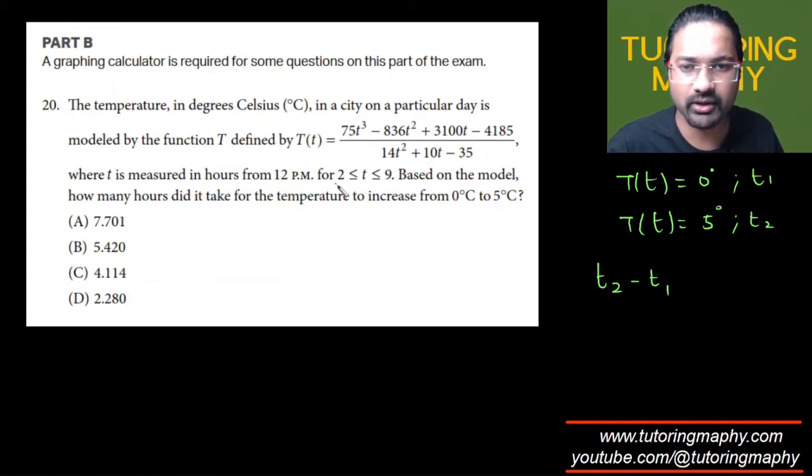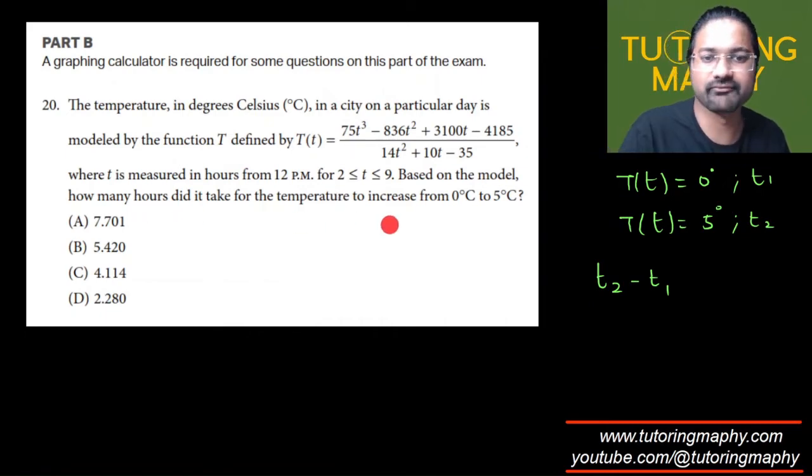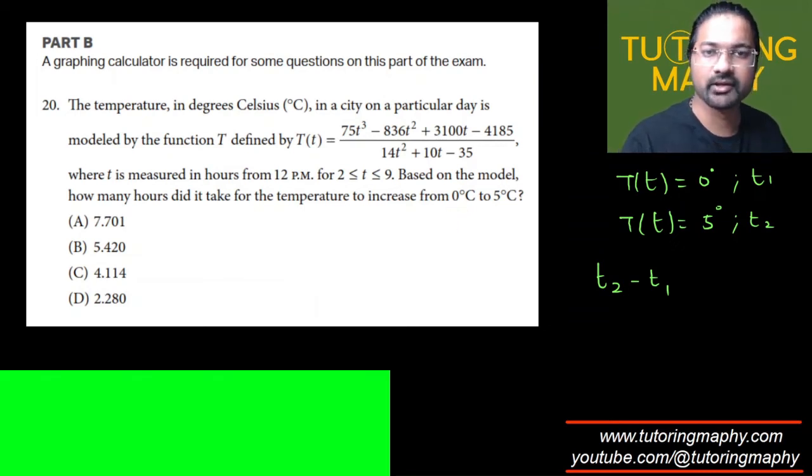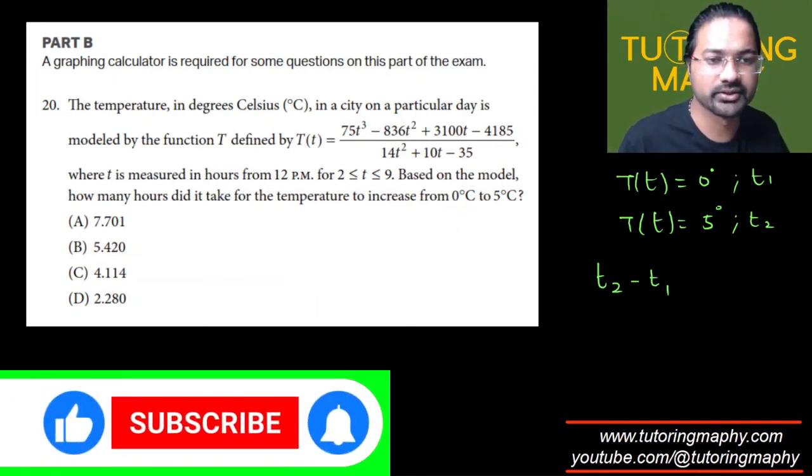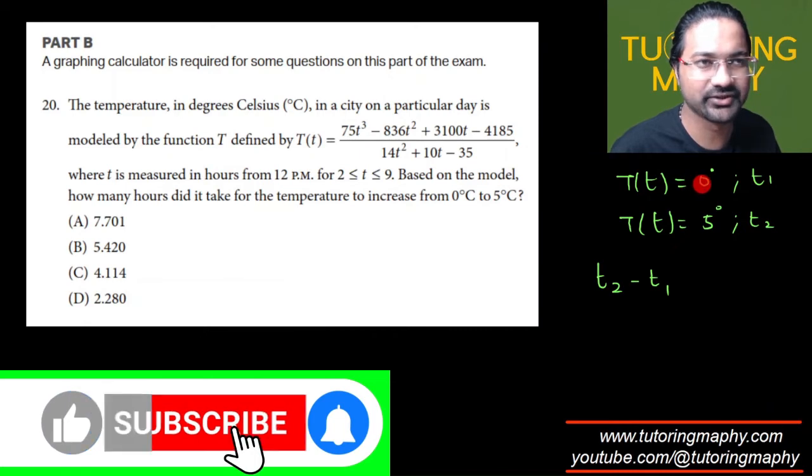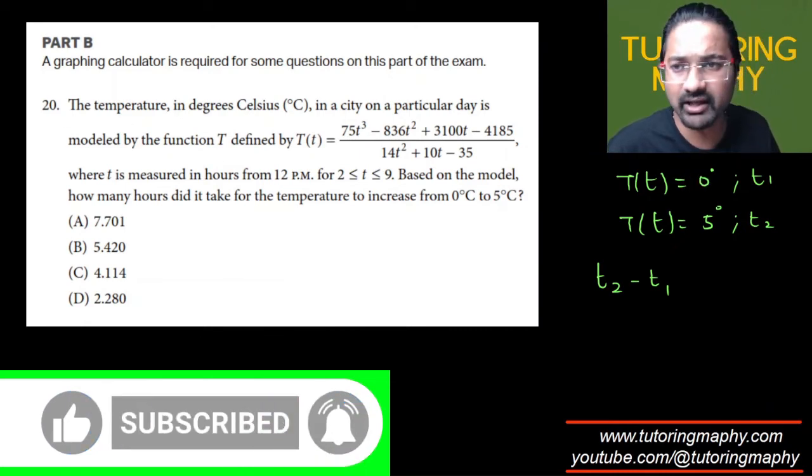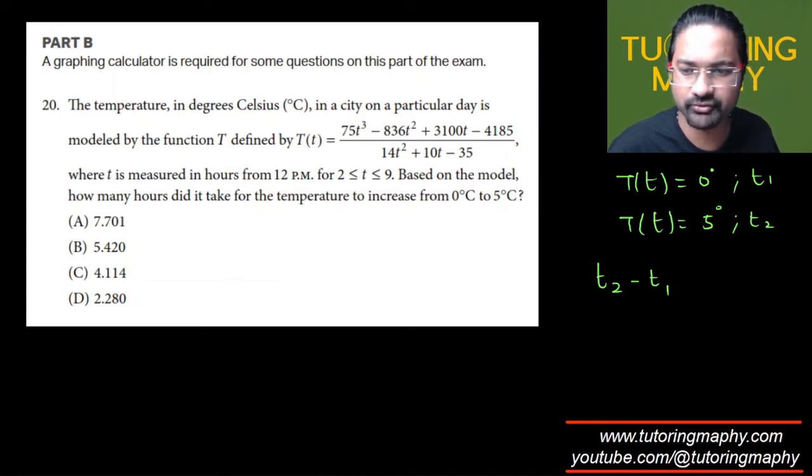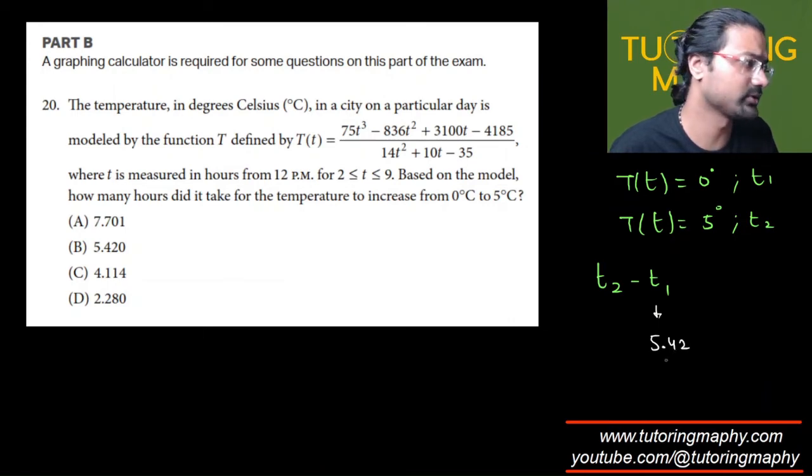They want the number of hours for the temperature to increase from 0 to 5. So when I plug this into the calculator and solve for T is equal to 0, I'm getting the value of the temperature t1 as 5.42. This is the value of t1, and when I plug this into